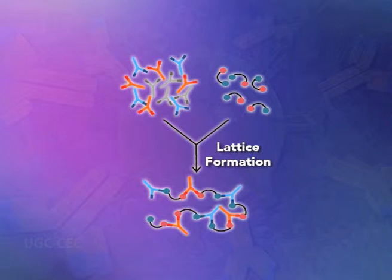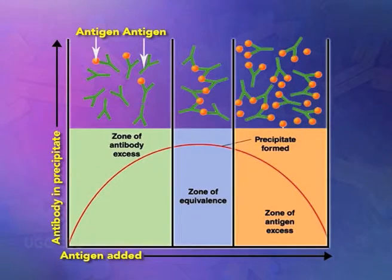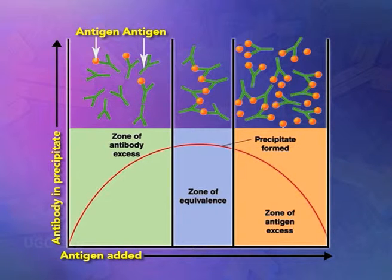Formation of an antigen-antibody lattice depends on the valency of both the antigen and the antibody. The antibody should be bivalent, and the antigen must be either bivalent or polyvalent. The zone of equivalence is a point at which maximum precipitation occurs. This reaction is widely used in several immunological techniques, and precipitation occurs in both fluid and gel.